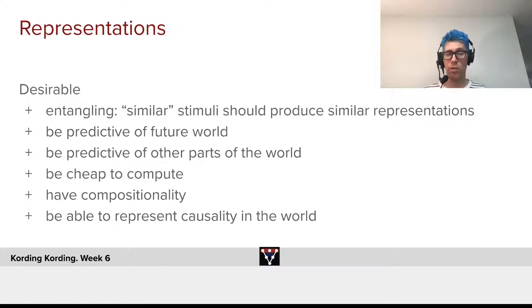I want representations to be cheap to compute. I want them to allow for compositionality—I can represent the world in terms of the objects that are here. I also might want a representation to be able to causally represent the world. Now some of these features are very complicated, but many of them can be used for training representations in an unsupervised way. And as we shall see, the representations induced by convnets have many of these desirable properties, though not all of them.